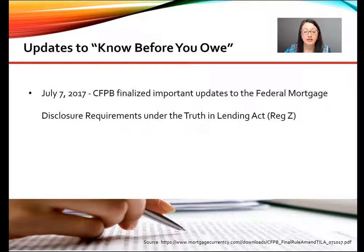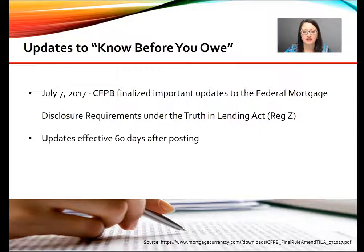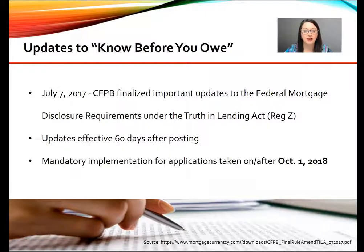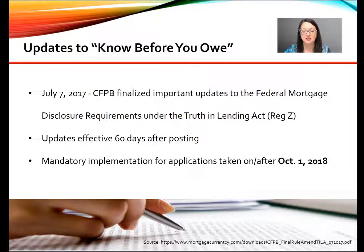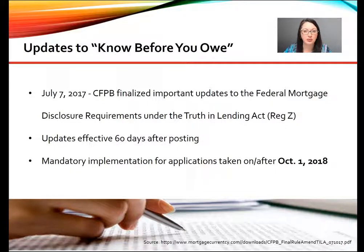The CFPB just finalized on July 7th some important updates to the Federal Mortgage Disclosure Requirements under the Truth in Lending, which is Regulation Z. These updates are meant to be effective 60 days after the posting; however, there's mandatory implementation required for applications taken on or after October 1st, 2018. The reason the date is so far in advance is so that lenders and vendors have time to put these systems in place and make the changes to their current processes.